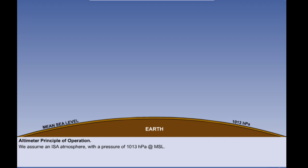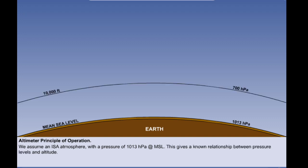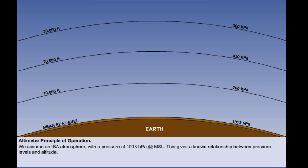Now let's consider the principle on which the altimeter works. We assume an ISA atmosphere with a pressure of 1013 hectopascals at mean sea level. If it is an ISA atmosphere, 10,000 feet will occur at a pressure of approximately 700 hectopascals, 20,000 feet will be at 450, and 30,000 feet will have a pressure of about 300 hectopascals. These numbers have been rounded slightly but they are very close to the actual altitudes at which these pressures occur. Remember these pressures will only be found at these levels on an ISA day.